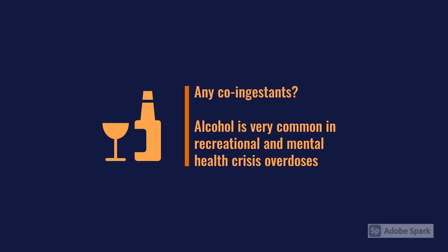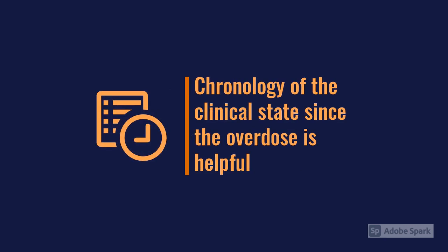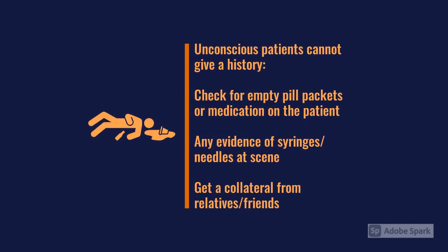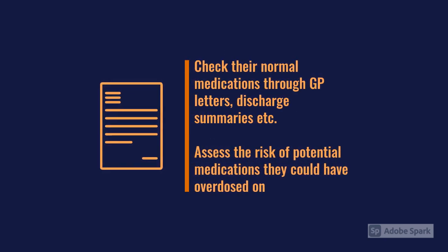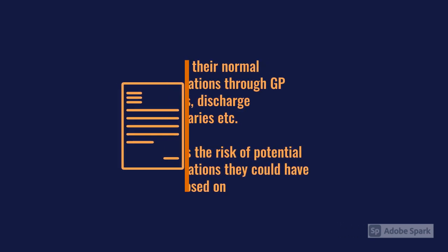After ascertaining what's happened, get a history of the clinical state since then - have they been asymptomatic or have they developed symptoms, and from when? In unconscious patients this won't be possible, so look for evidence like empty pill packets in pockets or information from relatives. Take a medication history and make a risk assessment of the worst thing the patient could have taken - for example, if they're on omeprazole and venlafaxine, the venlafaxine overdose is the more dangerous scenario.